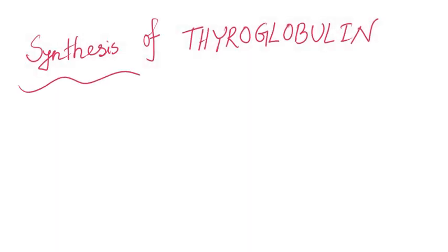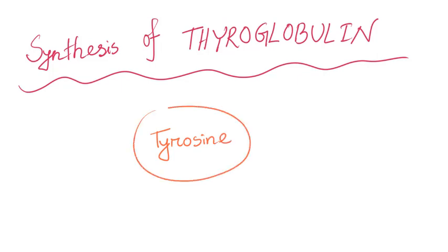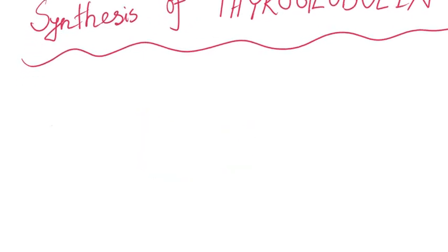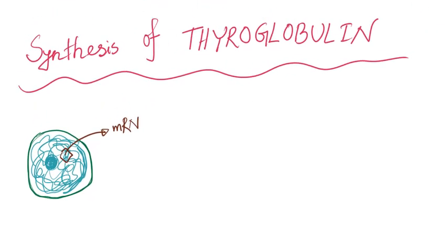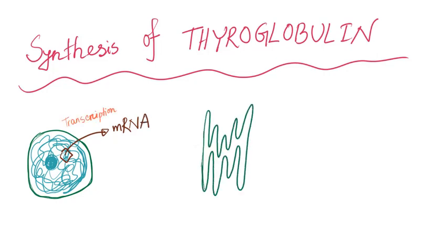The second step is the synthesis of another raw material, thyroglobulin molecule. Thyroglobulin is composed of many types of amino acids. Most important among them is tyrosine. Now, the question is, how is thyroglobulin formed? In the nucleus of the thyroid cells, there is a special type of gene which is responsible for transcription of a special type of mRNA. This mRNA is translated to thyroglobulin in the ribosome.